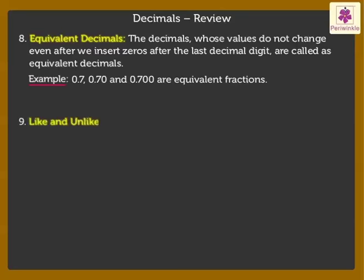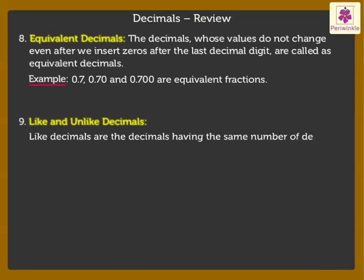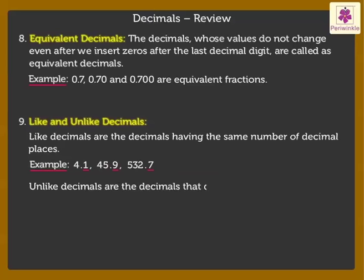Like and unlike decimals: Like decimals are the decimals having the same number of decimal places. For example... Unlike decimals are the decimals that do not have same number of decimal places. For example...